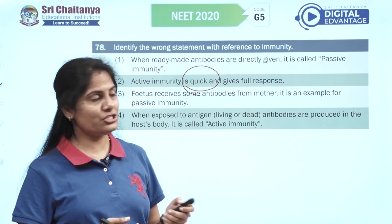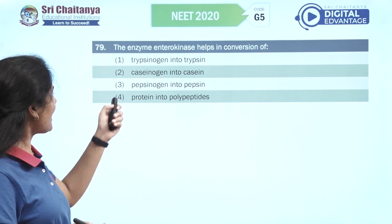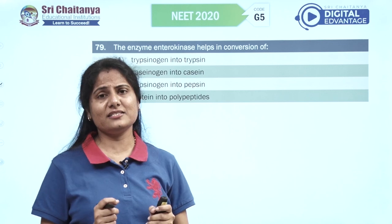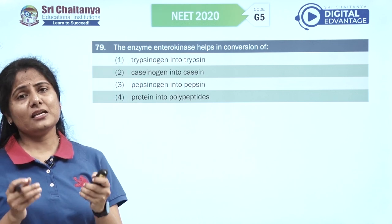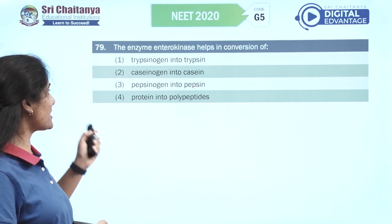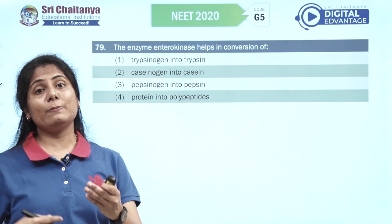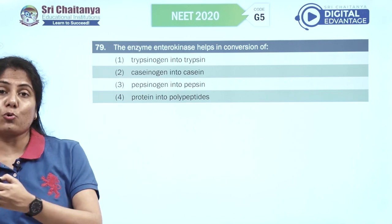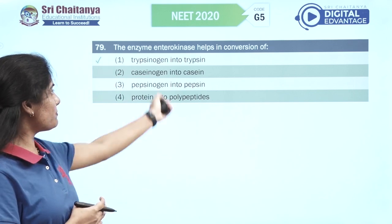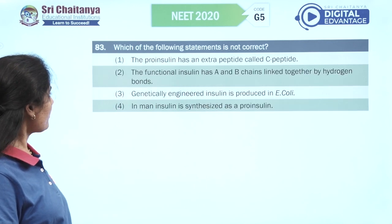The enzyme enterokinase helps in conversion of — quite an easy question. Enterokinase is present in succus entericus as a brush border enzyme, converting trypsinogen to trypsin, which then activates other enzymes like procarboxypeptidase. Trypsinogen to trypsin is the right answer.